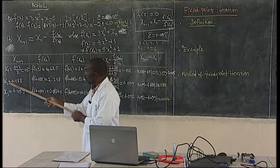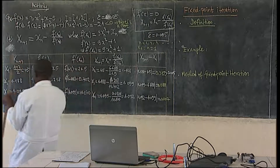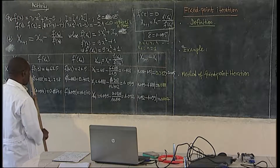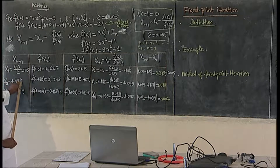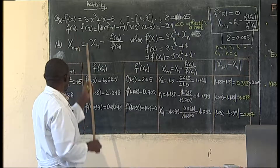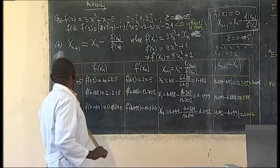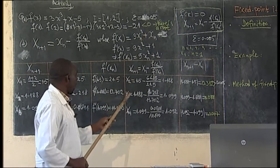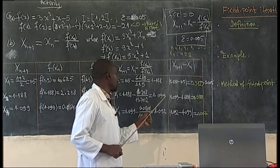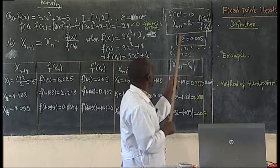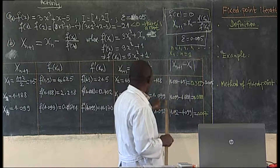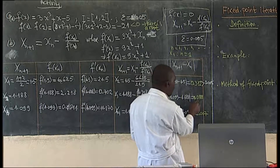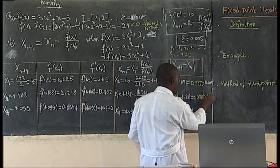So with x(2) = 1.188, this will give x(3). When you introduce this value in the function, you get 2.218. At the same time, replacing this value in the derivative, you get 13.702. Continuing the formula, x(3) will be having 1.099. The absolute value of |x(3) - x(2)| = |1.099 - 1.188| = 0.088. Still, this is greater than 0.005.